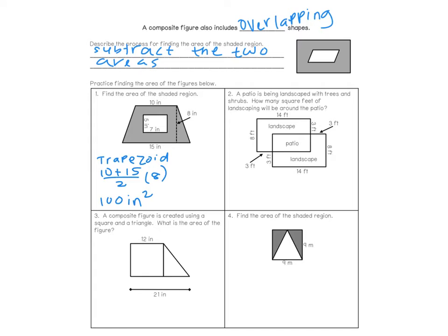The next step is to find the area of the rectangle. That's just base times height, so 5 times 7, which gives us 35 inches squared.